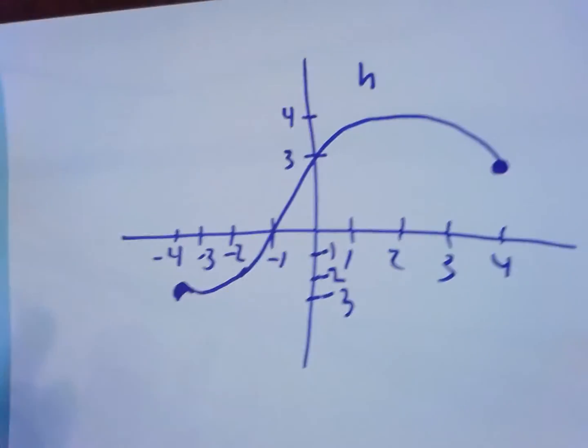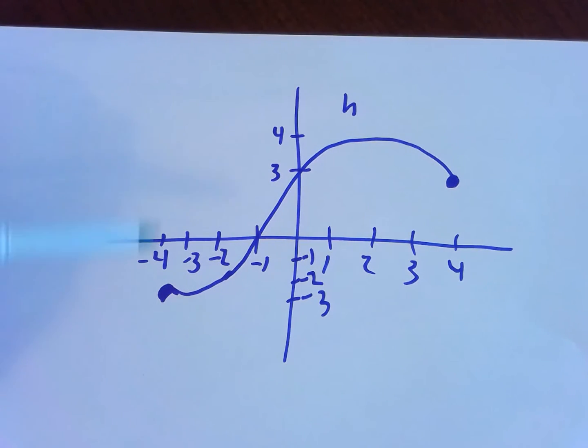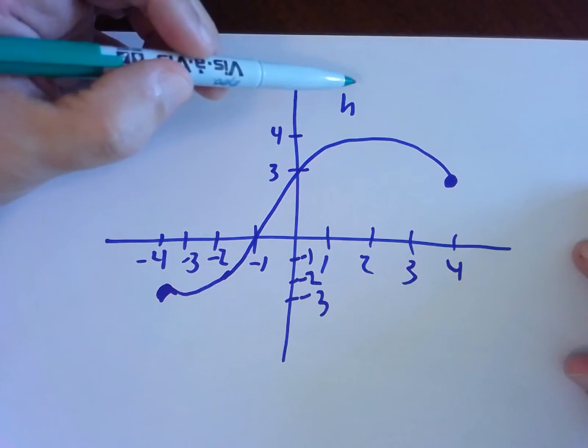Okay, what if somebody hands me a graph? So I have this function here. This is a function. We know it is. Passes the vertical line test. We've named it h.